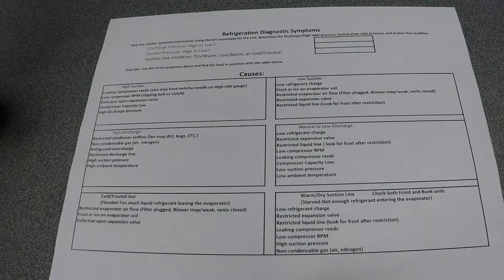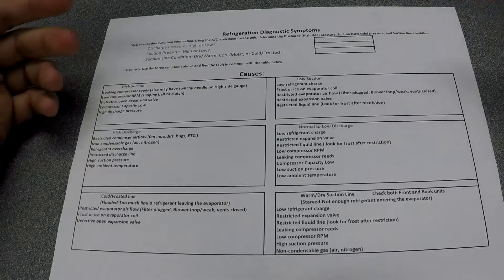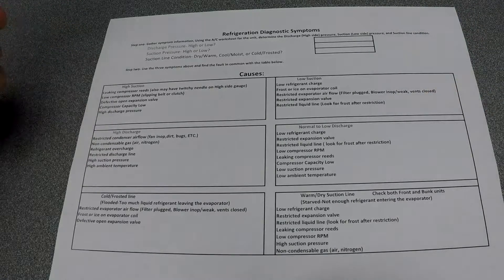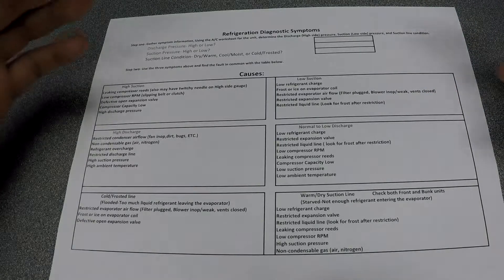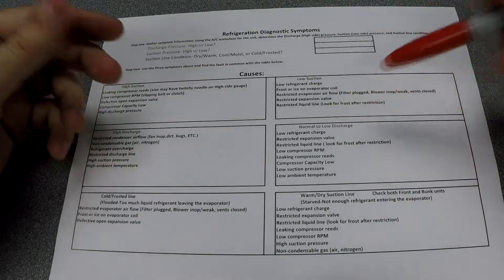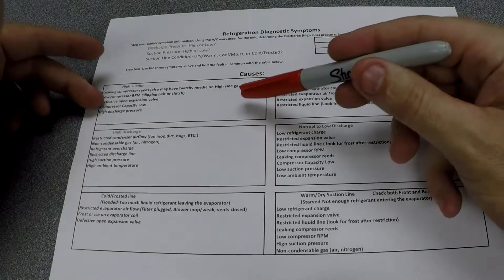Okay, so here's the sheet off the portal. I'll put the link to where the sheet is down below. The way this works is you do your AC performance test and you find out if you have high discharge pressure, high suction pressure, low suction pressure, and then also check your suction line.